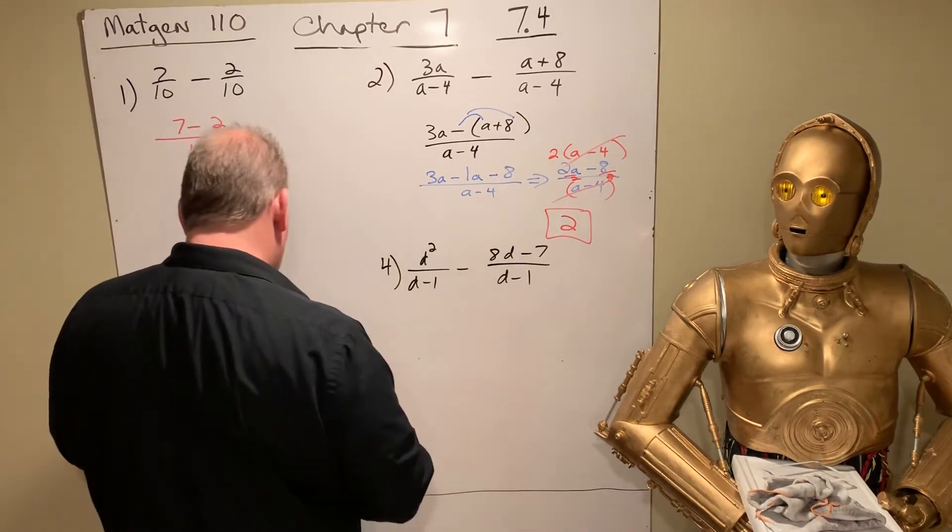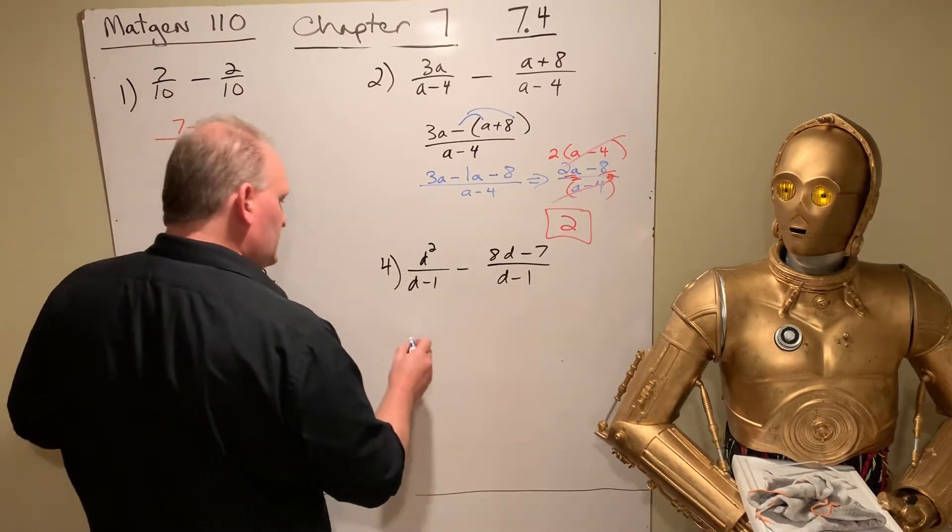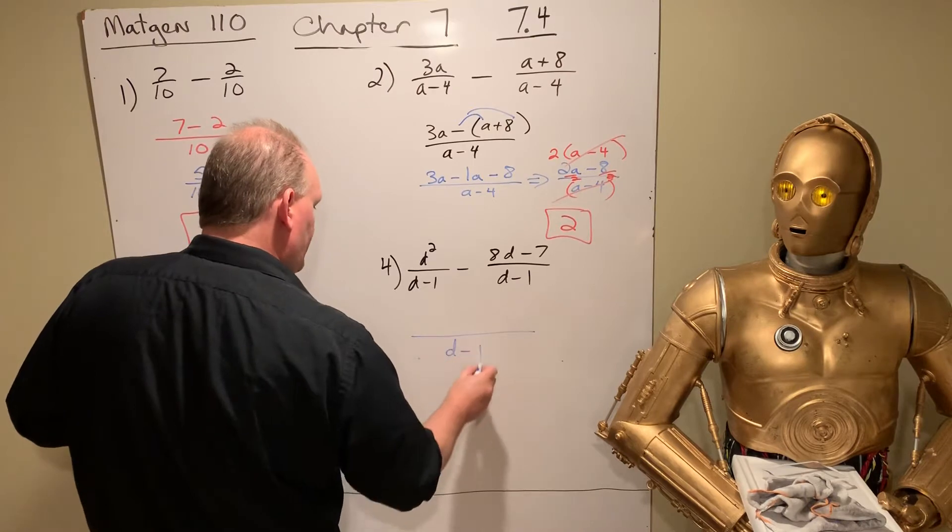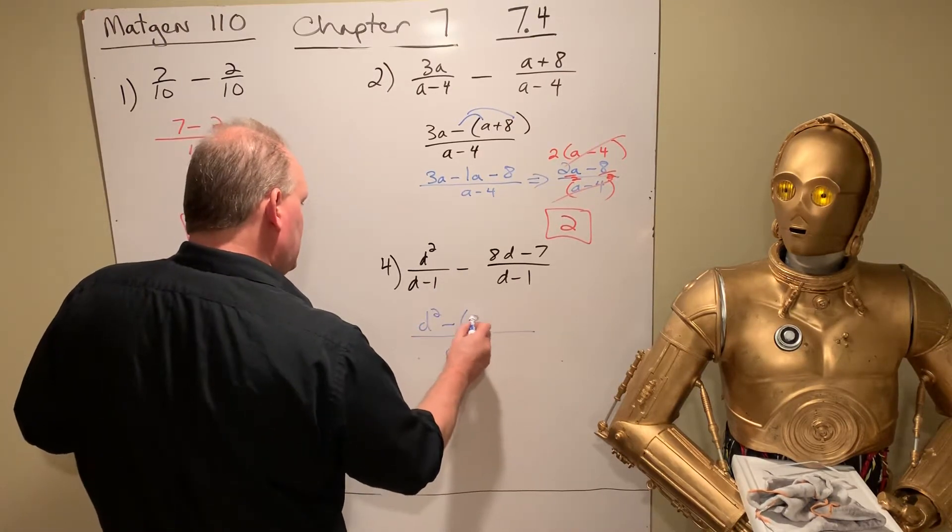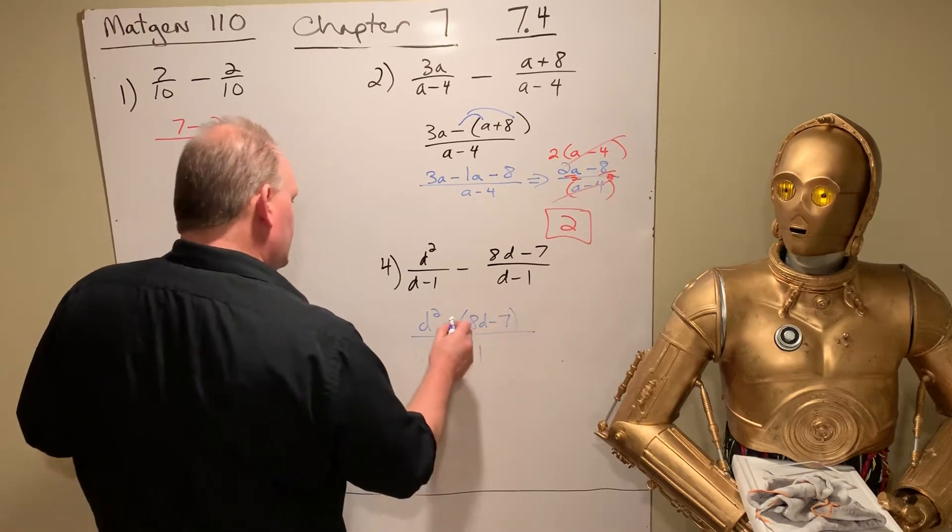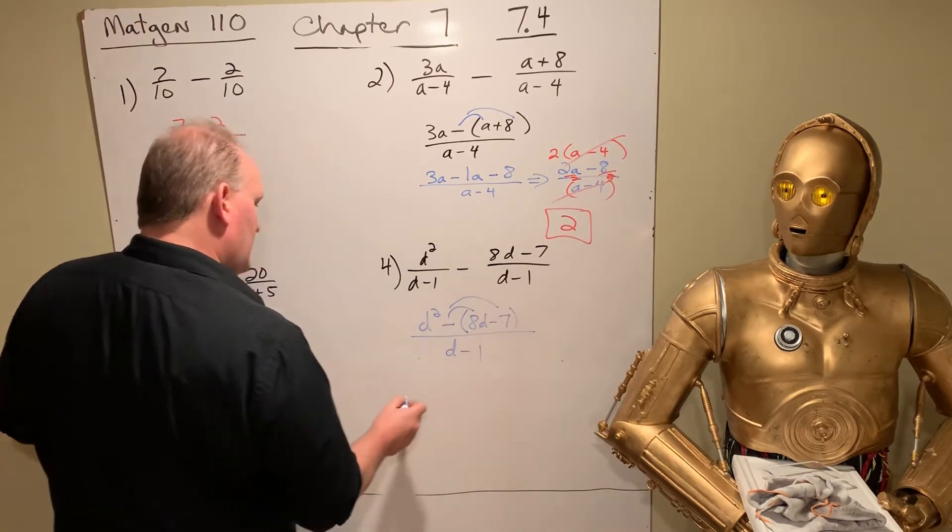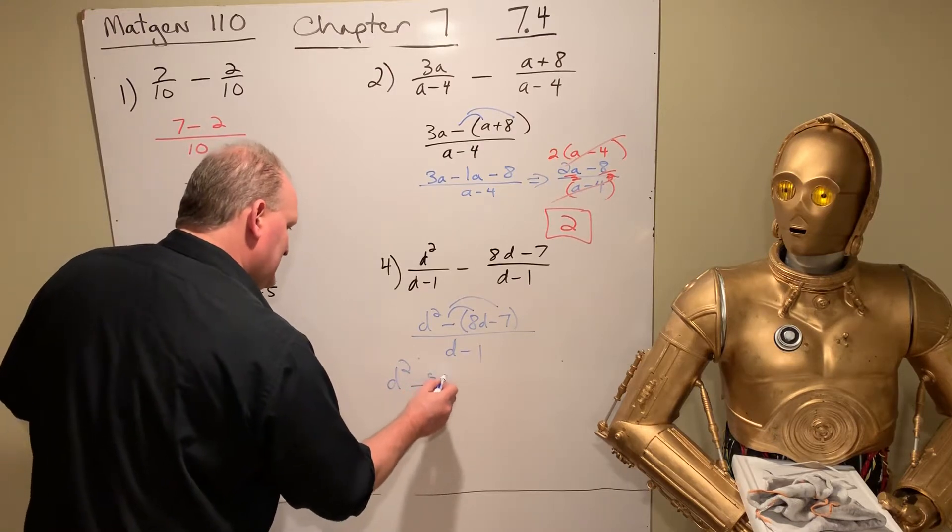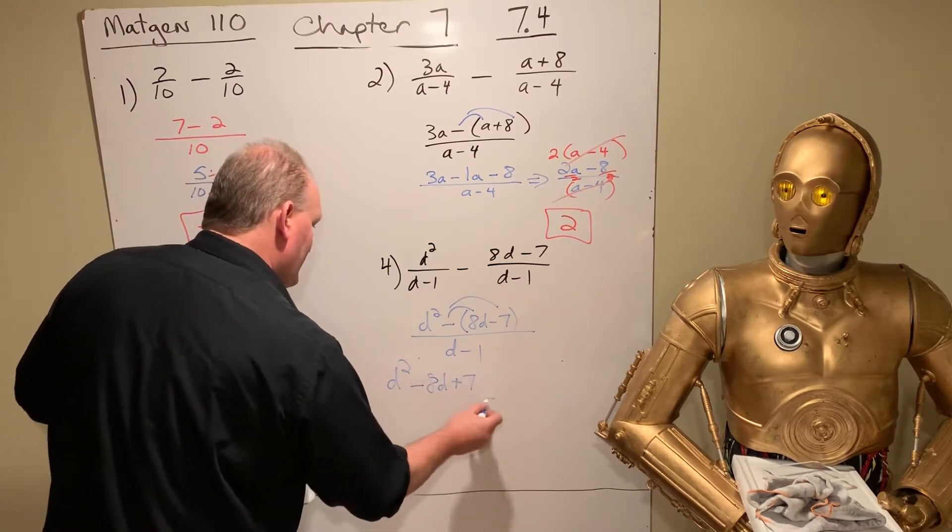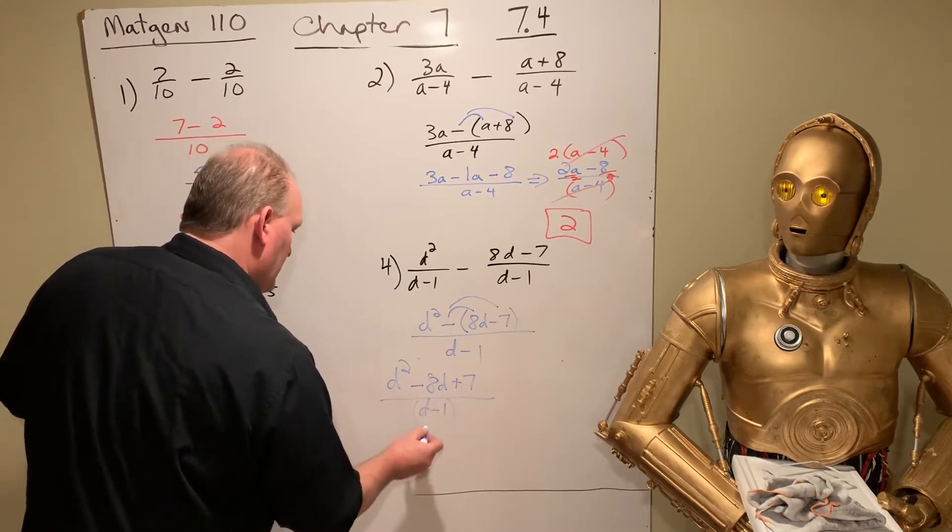Let's do this one again. This one's a little trickier. So we have D minus 1 on the bottom. We have D squared minus quantity 8D minus 7. So that means we do the distributive property. We get D squared minus 8D plus 7, all over D minus 1.